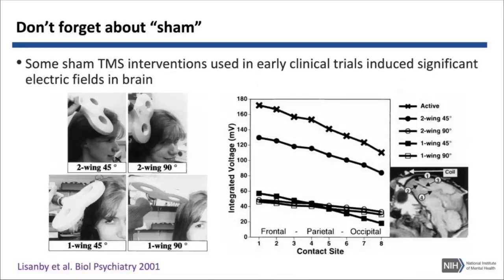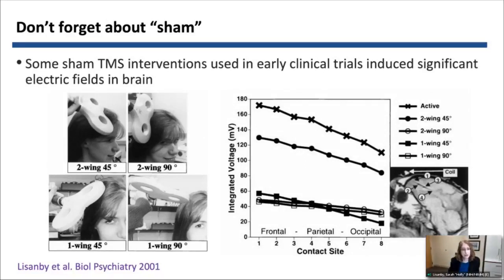The last point is: don't forget about sham. This is one of our early studies in an animal model — non-human primates — where we implanted electrodes to measure the voltage induced in the brain by different types of sham that were being used at the time in clinical trials. The top line is active, but the line right below it is a sham intervention that was in use at the time. Animal models can be very important in understanding dose response functions and the interventions we use.